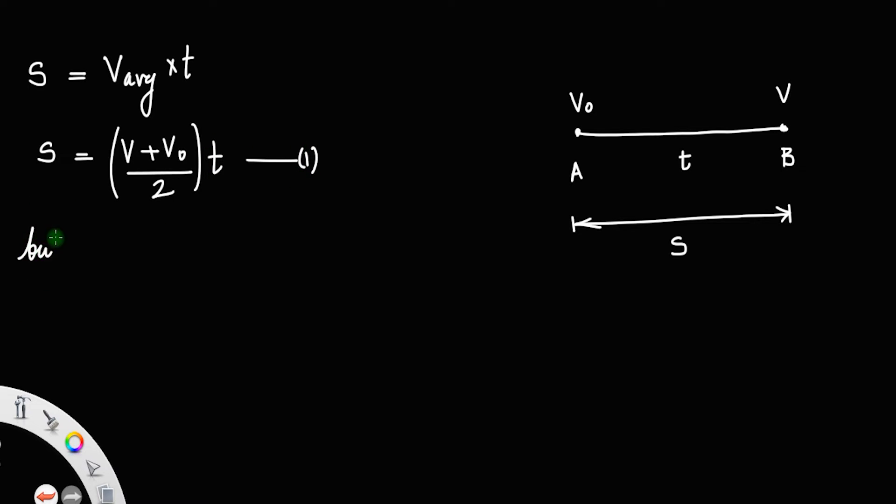But you know acceleration a equals change in velocity divided by time. Taking t to the left and a to the denominator, you get t equals (v - v₀)/a. Let this be equation number 2.